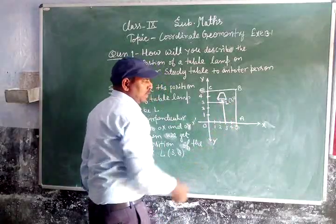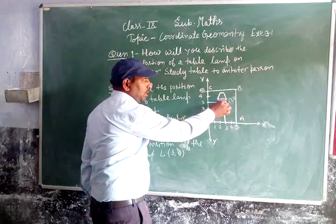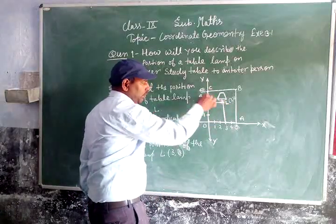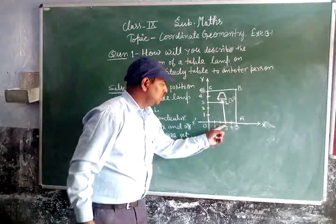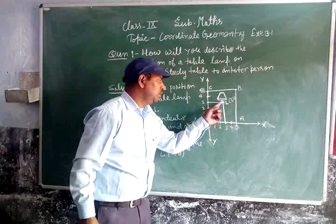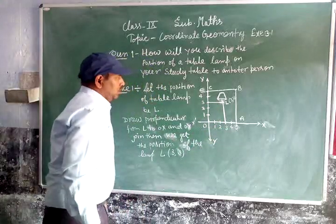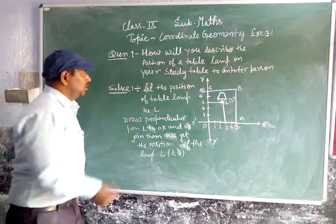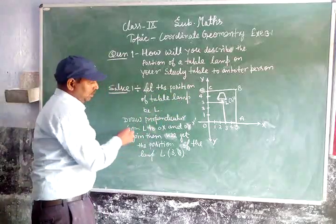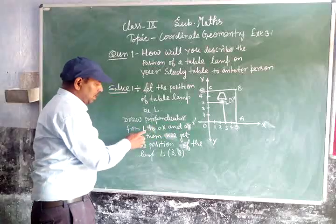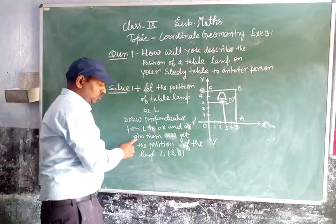Draw a perpendicular from L to OX and another perpendicular from L to OY. The perpendicular to OX meets at three and the perpendicular to OY also meets at three. So the position of the lamp L — draw perpendiculars from L to OX and OY and join them.